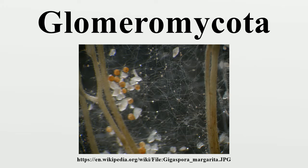Phylogeny. Initial studies of the Glomeromycota were based on the morphology of soil-borne sporocarps found in or near colonized plant roots. Distinguishing features such as wall morphologies, size, shape, color, hyphal attachment, and reaction to staining compounds allow the phylogeny to be constructed. Superficial similarities led to the initial placement of genus Glomus in the unrelated family Endogonaceae.